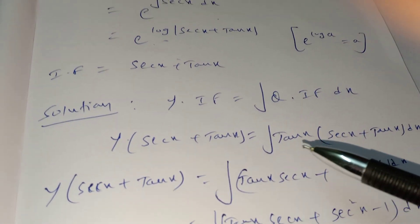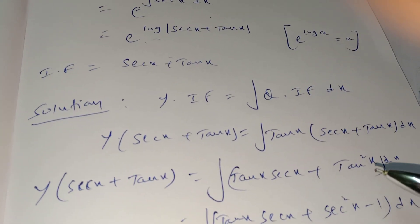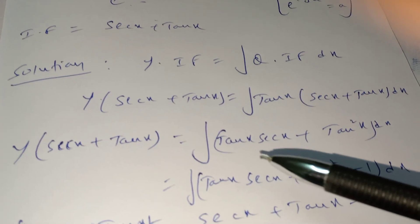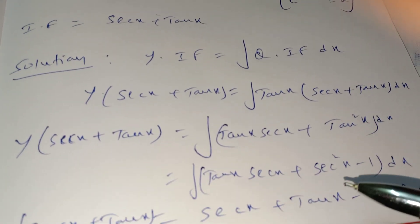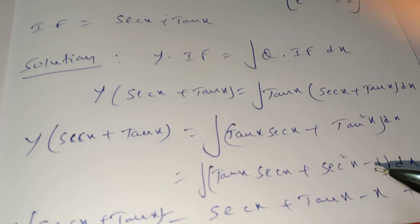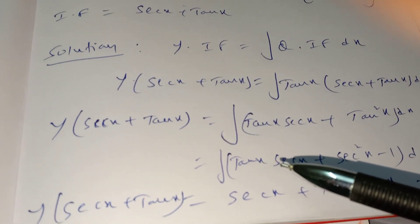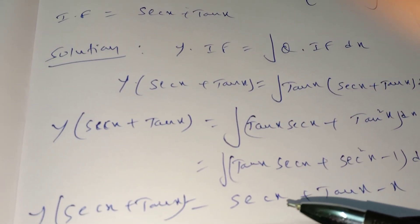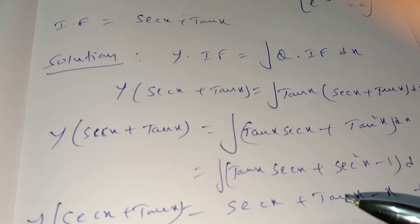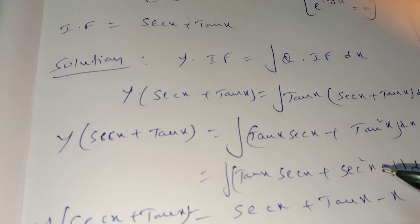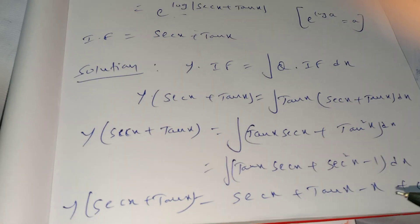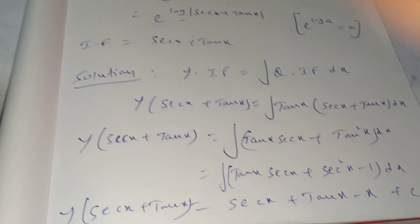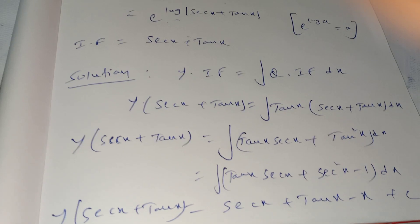Expanding: tan(x)·sec(x) stays as is, and tan²(x) is written as sec²(x) − 1. Integrating term by term: ∫tan(x)·sec(x) dx = sec(x), ∫sec²(x) dx = tan(x), and ∫1 dx = x. So the solution is y(sec x + tan x) = sec(x) + tan(x) − x + C.